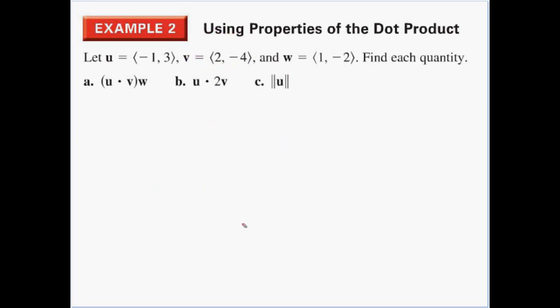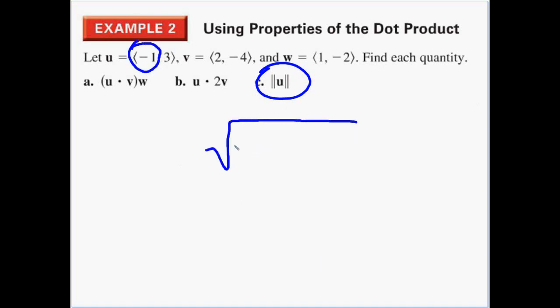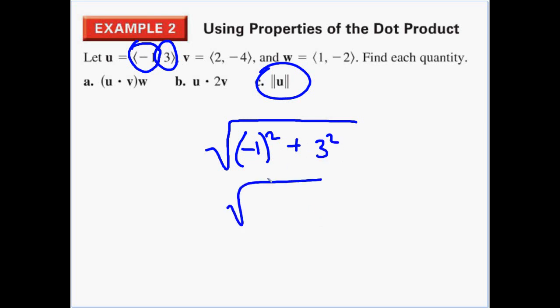The last part asks us to find the magnitude of u. We drop down a radical, take the first component negative one and square it, plus the second component three and square it. Negative one squared is one, three squared is nine. Under the radical we get the square root of ten.